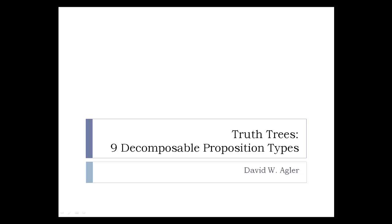This will be beneficial because when you start doing truth tree decomposition, it will provide you with a pretty automatic way of choosing rules. You will go through the process of identifying a particular proposition as a certain type and then apply the rule that corresponds to it. This is a better procedure than looking at the proposition and wondering which decomposition rule to apply and looking through the entire table.